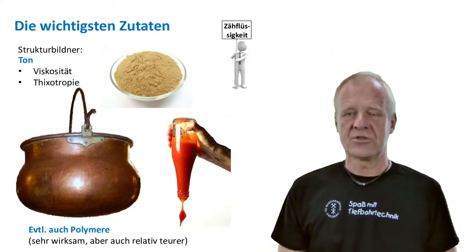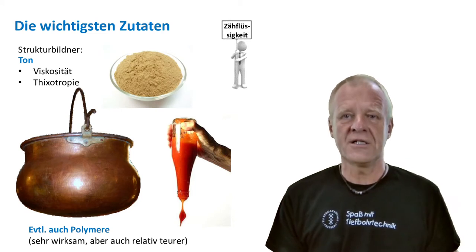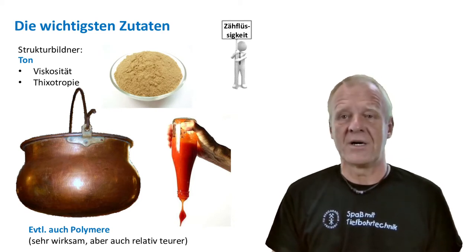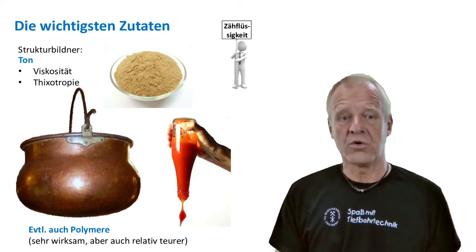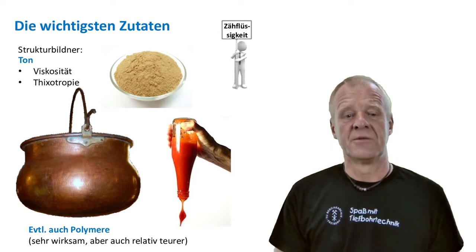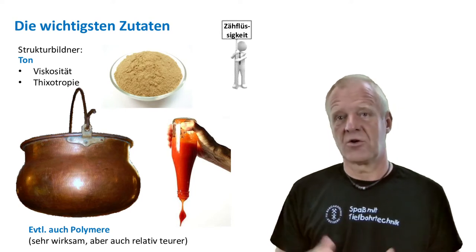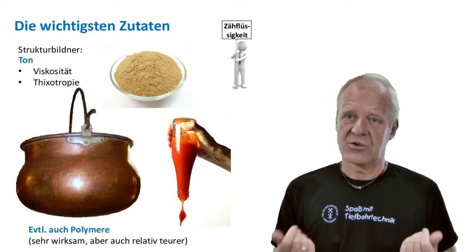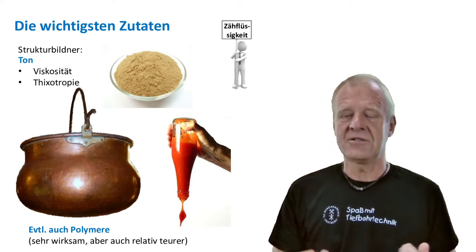An example is bentonite — this is a typical structure builder. It's a special type of clay. You can also use polymers like starch, which can give even better hole cleaning, but on the other hand they can be very expensive.